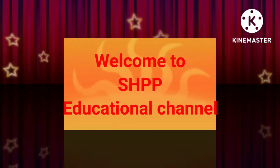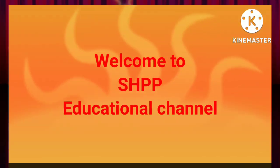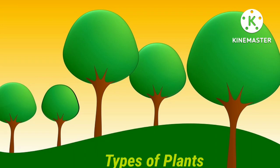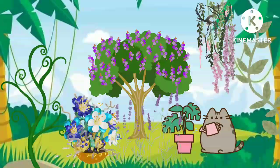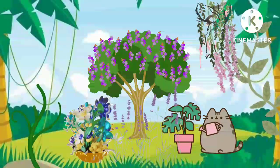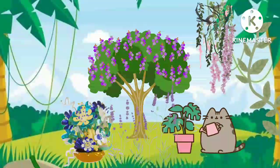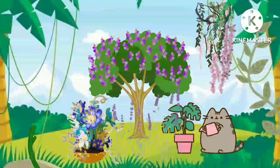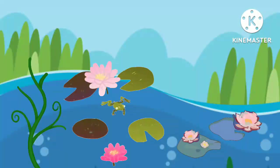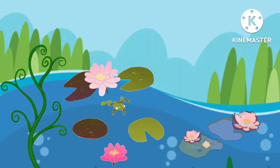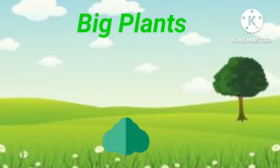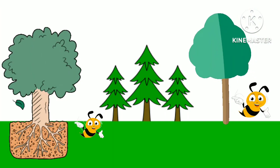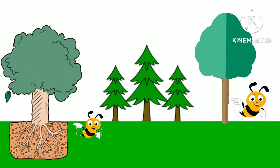Welcome to SHBP Educational Channel. Types of plants: there are different types of plants around us. They may be big or small. Many plants grow on land, while some grow in water.